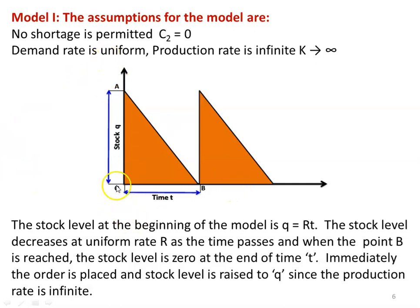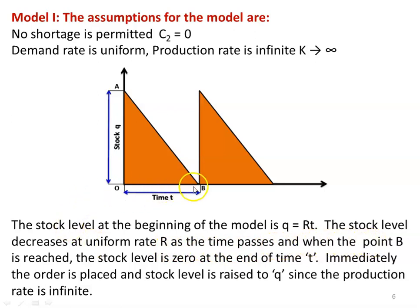This is the diagrammatic representation of model one. Triangle O-A-B represents one interval. At the beginning, the stock level is at point A, equal to Q. As time increases, the stock level decreases at the uniform rate R. When point B is reached, the stock level is 0 at the end of time T. We then place the order, and immediately — because production rate is infinite — the stock level rises back to Q. Any number of products can be procured at zero lead time.